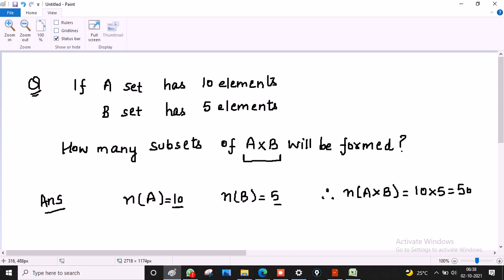Now, in A cross B, in a set of 50 elements, how many subsets are? The formula is 2 to the power of number of elements.